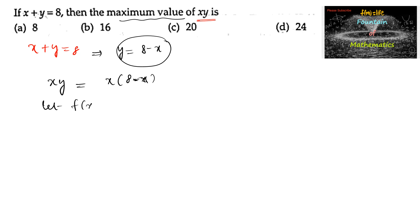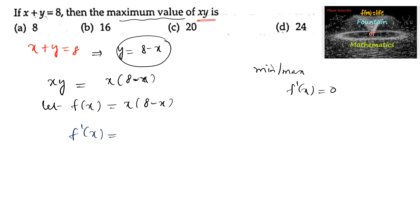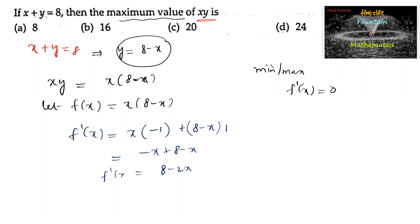Let us consider f of x is equal to x into 8 minus x, where we want the maximum value for this function. To get the minima or maxima, we set f dash of x equal to 0. Differentiating: f dash of x is equal to x into minus 1 plus 8 minus x into 1. Simplifying, you get minus x plus 8 minus x, that is 8 minus 2x.